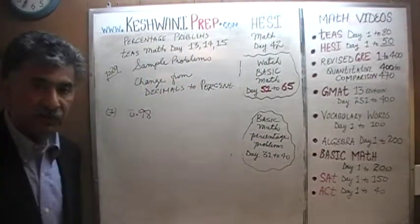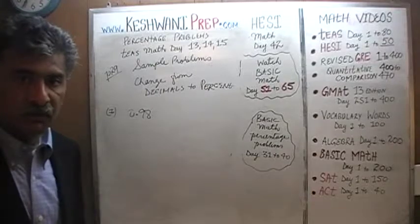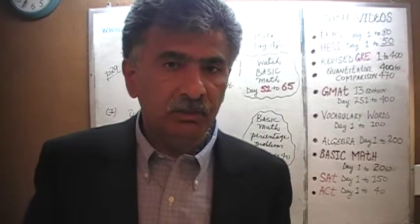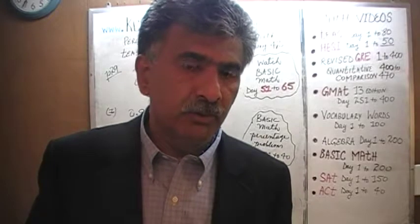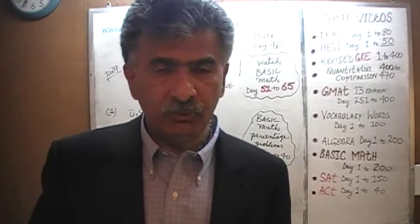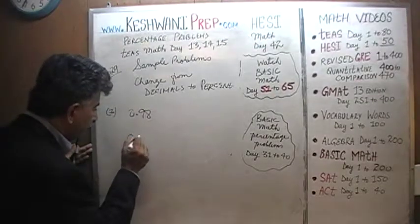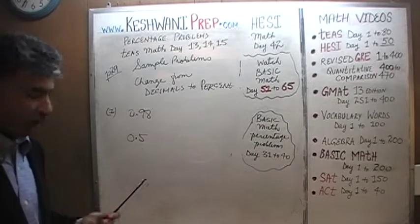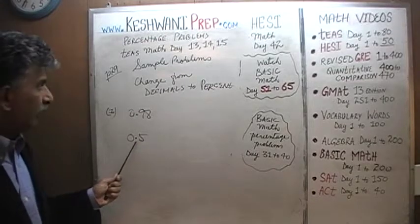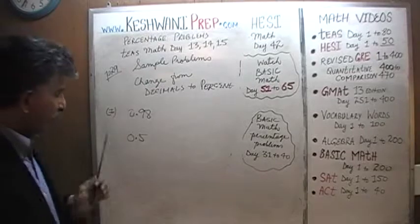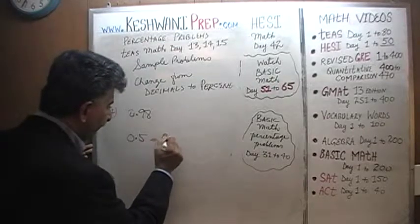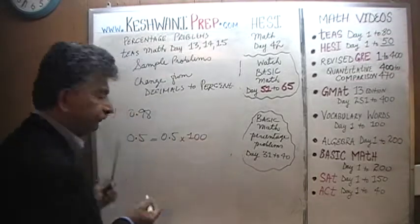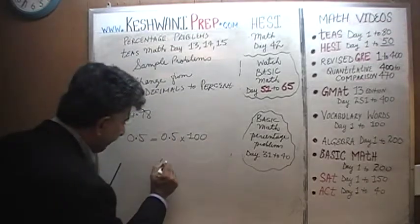If somebody gives you a decimal and asks you to convert to a percentage, look for the simplest possible scenario to which you already know the answer. For example, everybody knows that 0.5 is 50%. The question is, how do I go from 0.5, expressed in decimal, to percent? You take your 0.5 and multiply it by 100.